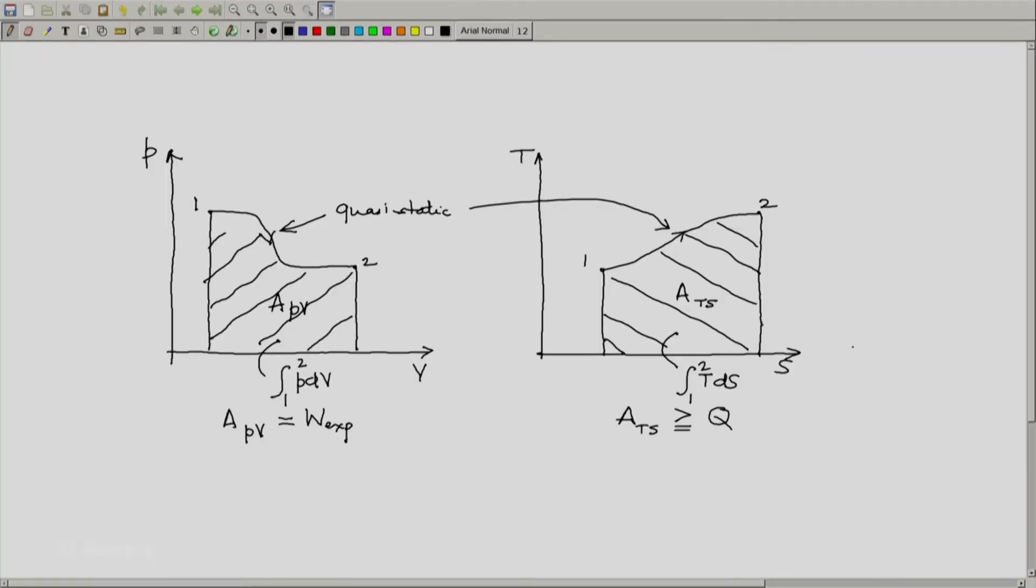So one area represents the expansion work. The other area does not directly represent the heat transfer but it can be greater than or at most equal to the heat absorbed by the system.